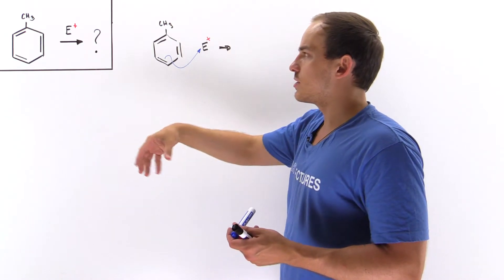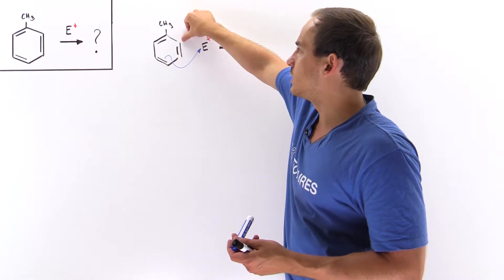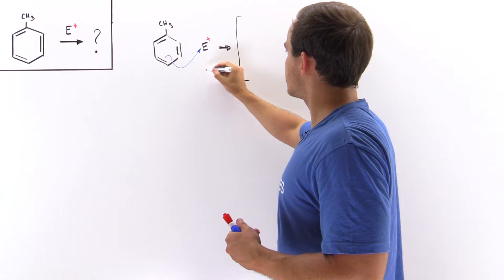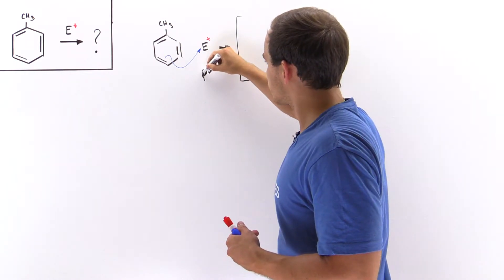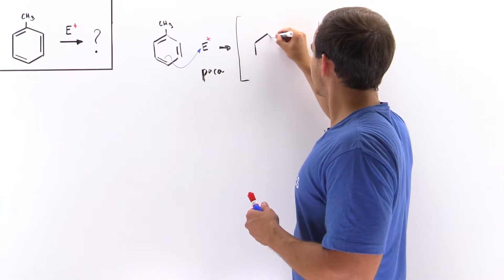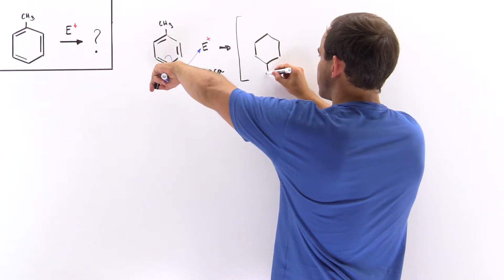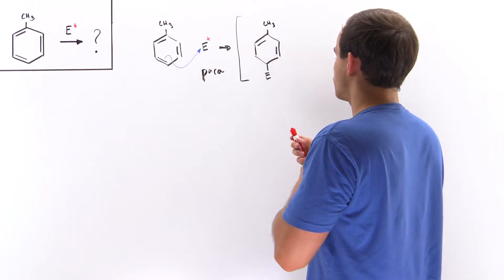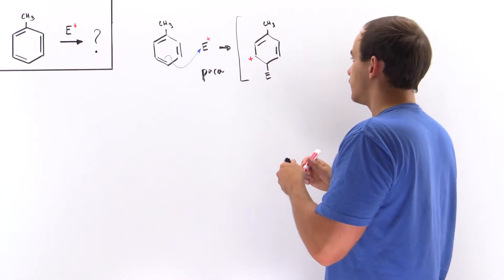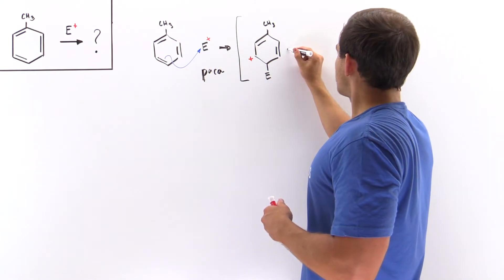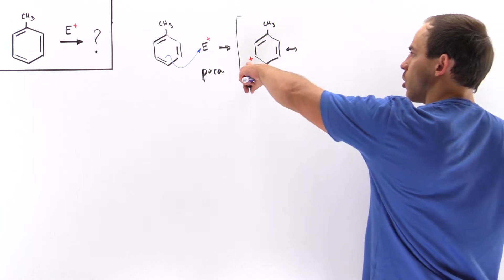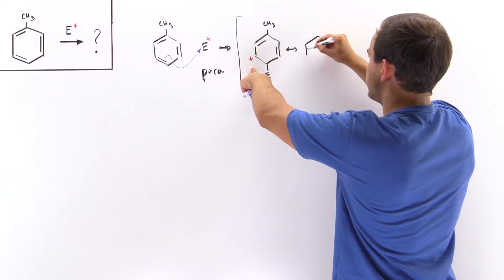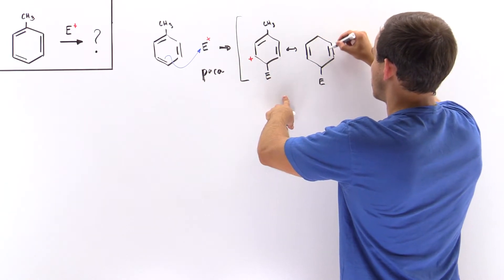Because we're examining the ortho-para pair, it doesn't matter which one we look at — we can look at the ortho or the para. I've chosen arbitrarily to look at the para substitution. In the first step we form a bond using the pi bond, with the methyl group present. This creates a positive charge on the fifth carbon.